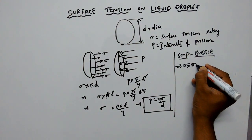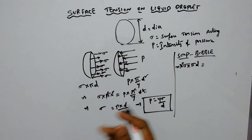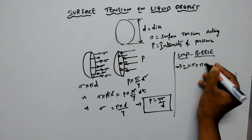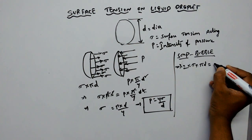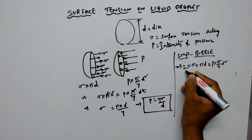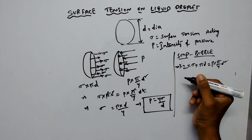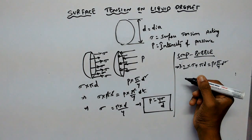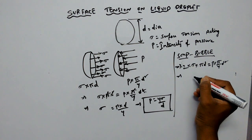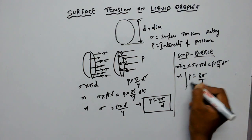For a soap bubble, there are two surfaces, so we write 2 into Sigma into pi d equals P into pi by 4 d squared. One surface is outside the soap bubble and the other is inside the soap bubble — one between air and the outer surface of the liquid, and one between air and the inner surface. Solving this equation, the intensity of pressure on the soap bubble equals 8 Sigma divided by d.